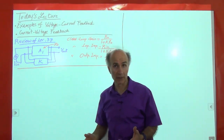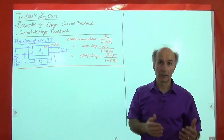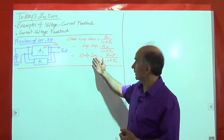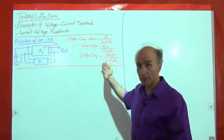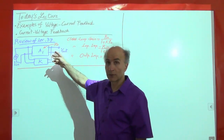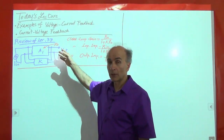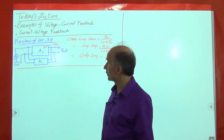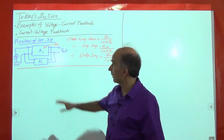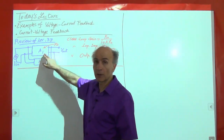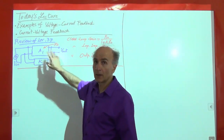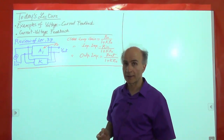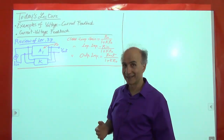A good trans-impedance amplifier has a very low input impedance. The output impedance also goes down simply because we're sensing the output voltage — we're trying to make the output a better voltage source. We call this the open-loop trans-impedance amplifier, and the closed-loop version the closed-loop trans-impedance amplifier, or TIA.